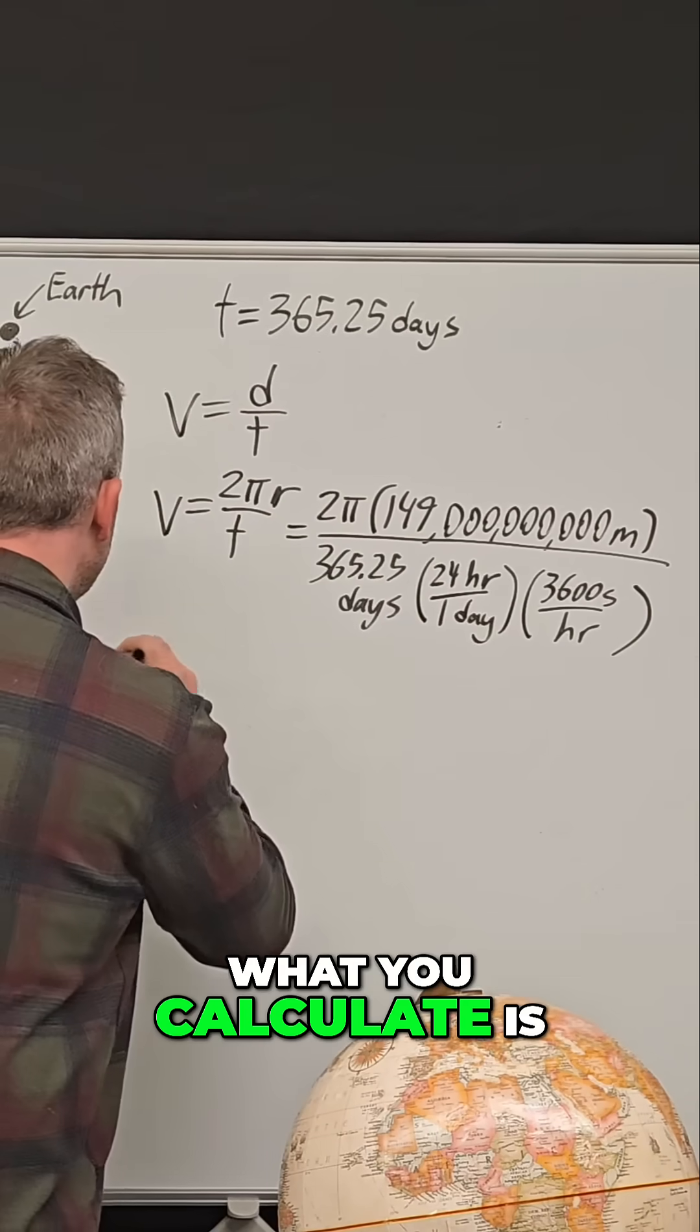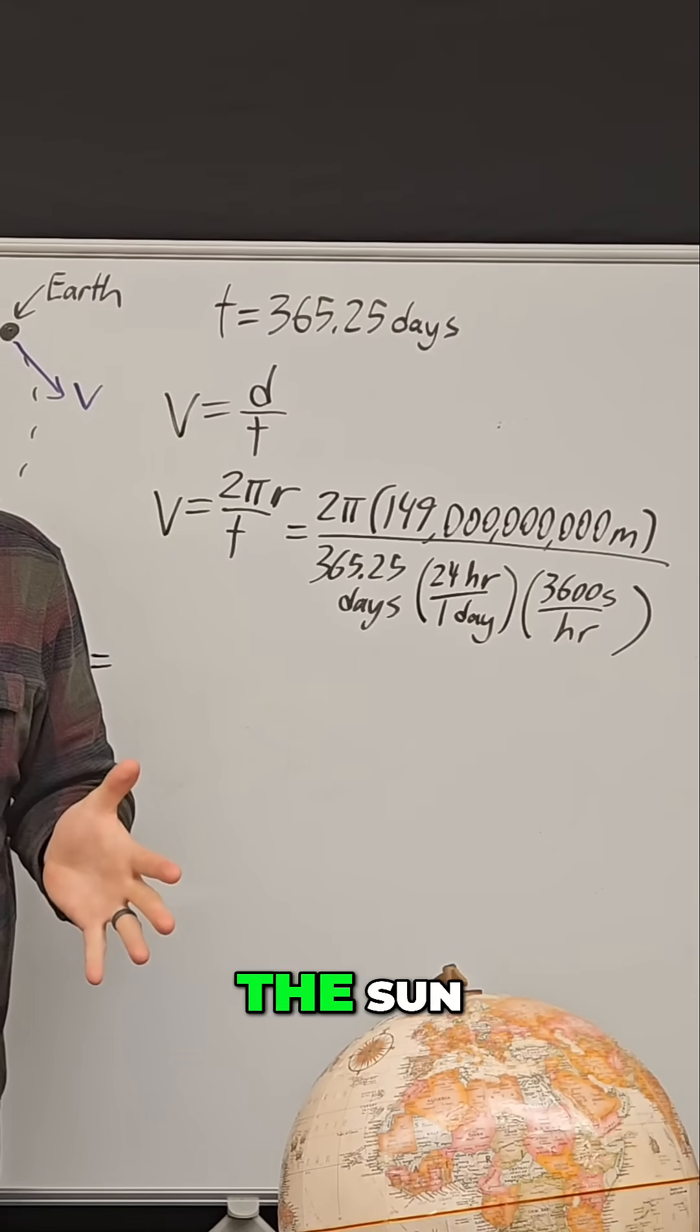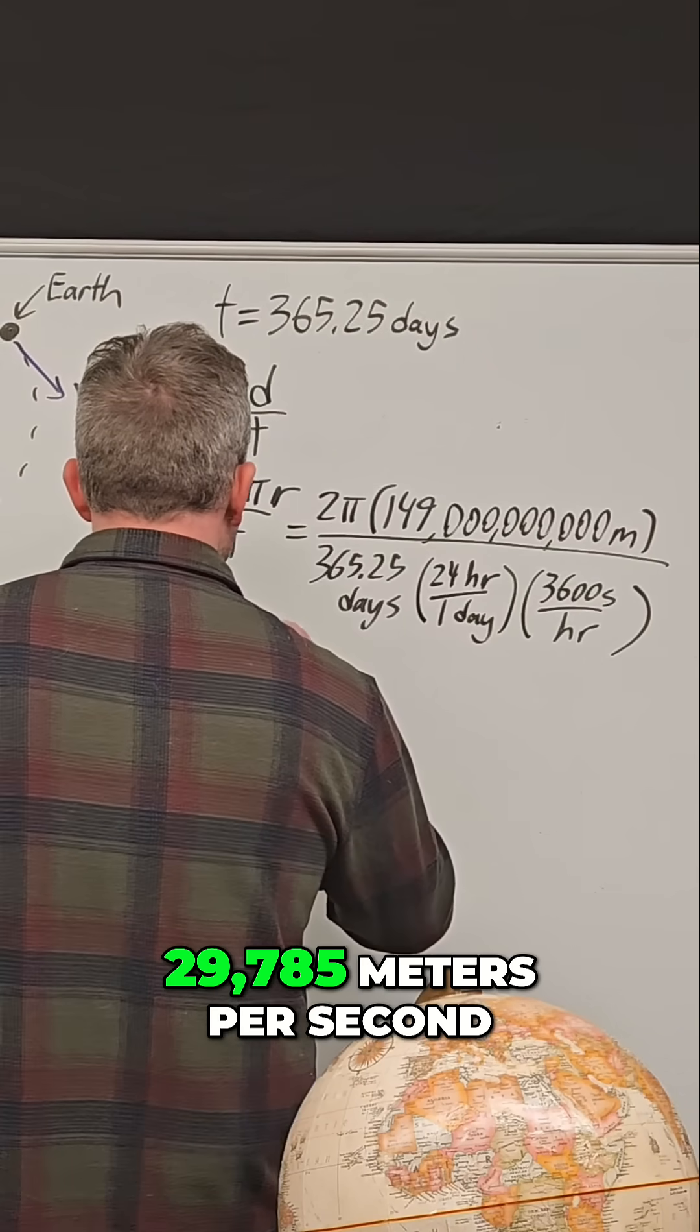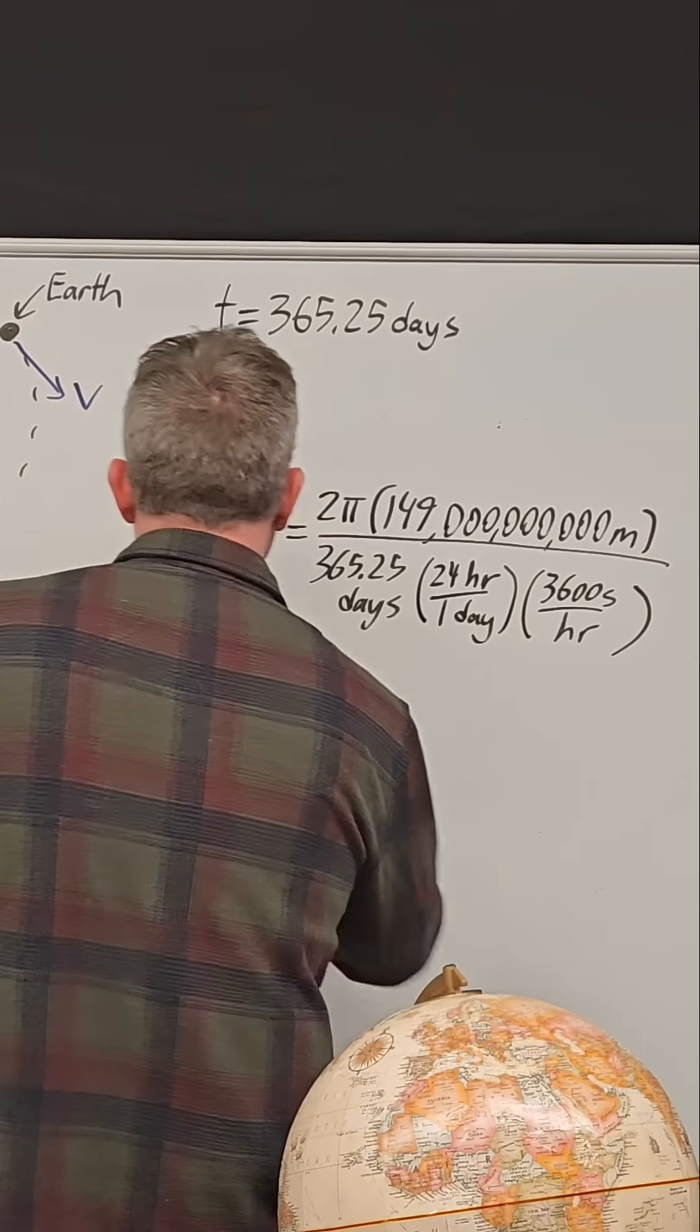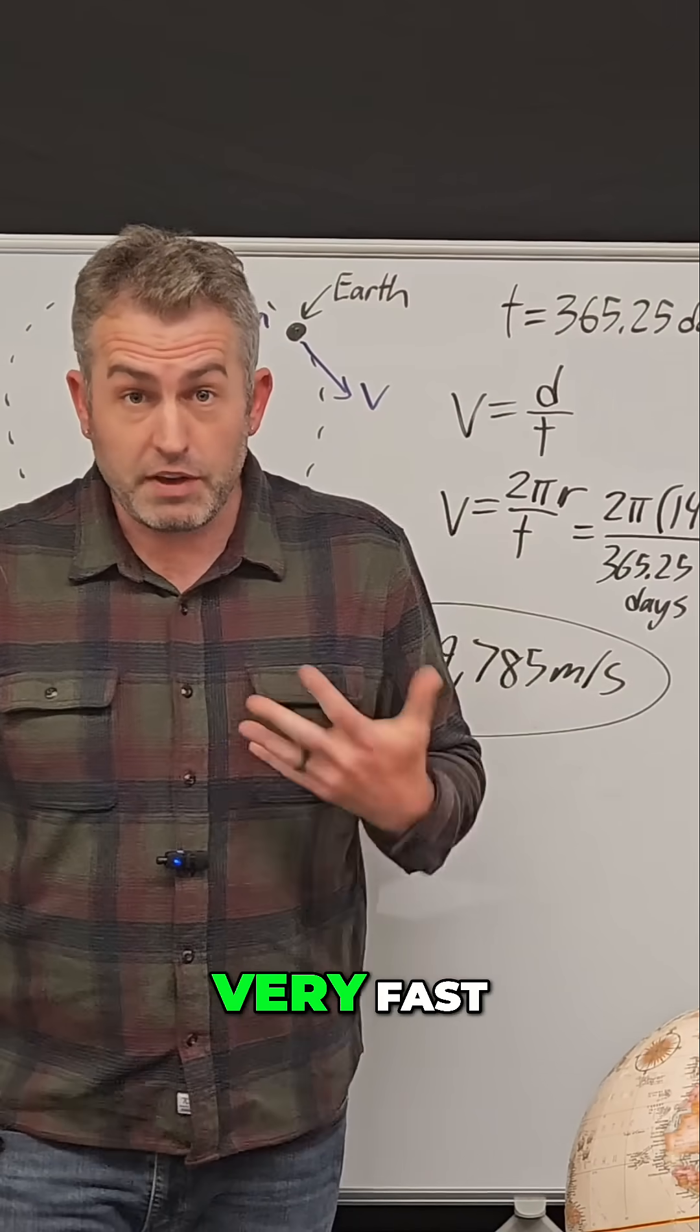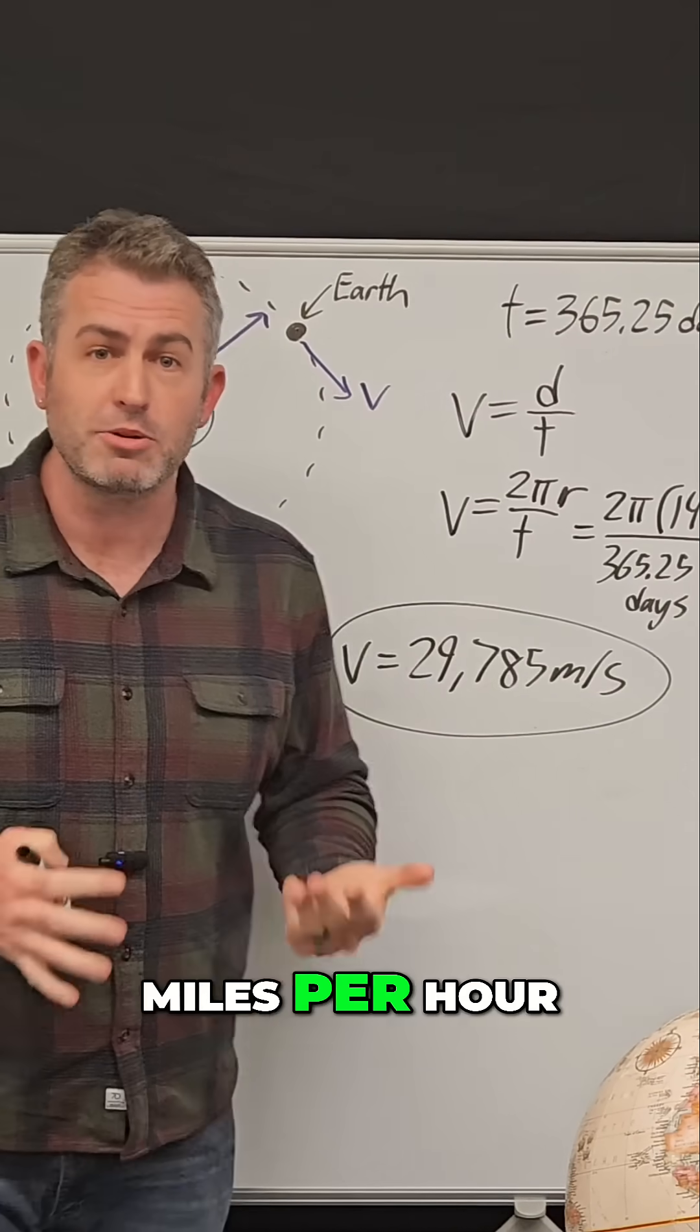And if you do all this math, what you calculate is the actual velocity of the Earth on average as it goes around the sun is approximately 29,785 meters per second. That's almost 30,000 meters per second. We're traveling very, very fast. This is over 66,000 miles per hour.